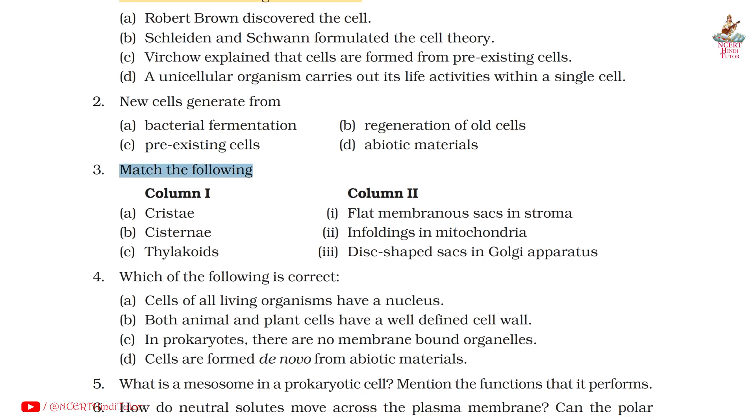Question 3: Match the following, Column 1 and Column 2. A. Cristae – 2. Infoldings in Mitochondria. B. Cisternae – 3. Disc-shaped sacs in Golgi apparatus.